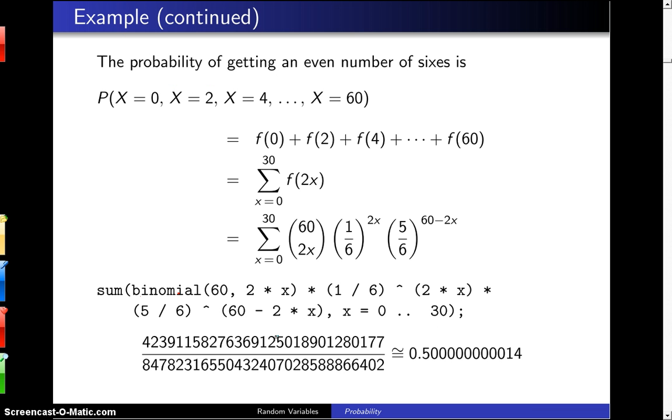Finally, if we want the probability of getting an even number of sixes, that is the probability that the random variable X is 0, 2, 4, 6, 8, all the way up to 60.